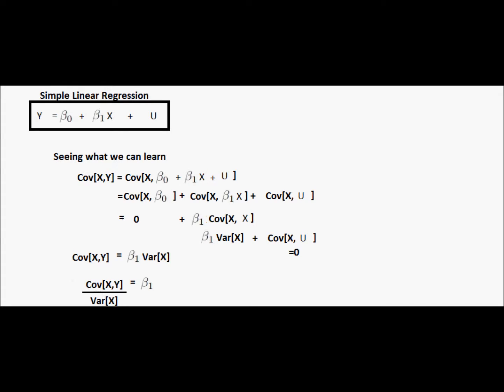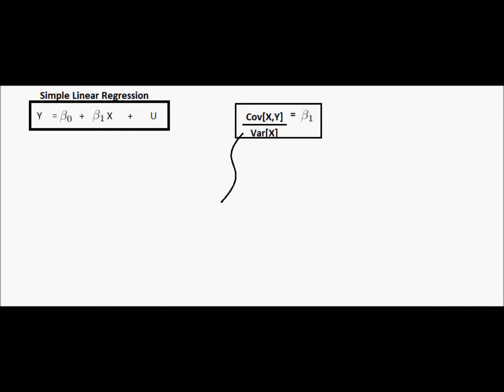In terms of estimable features of the joint distribution of x and y. Before we get too excited about this expression covariance of x with y over variance of x, we should make one sort of caveat to this. This is the population covariance of x with y, this is the population variance of x, and in practice we won't be able to observe these directly.